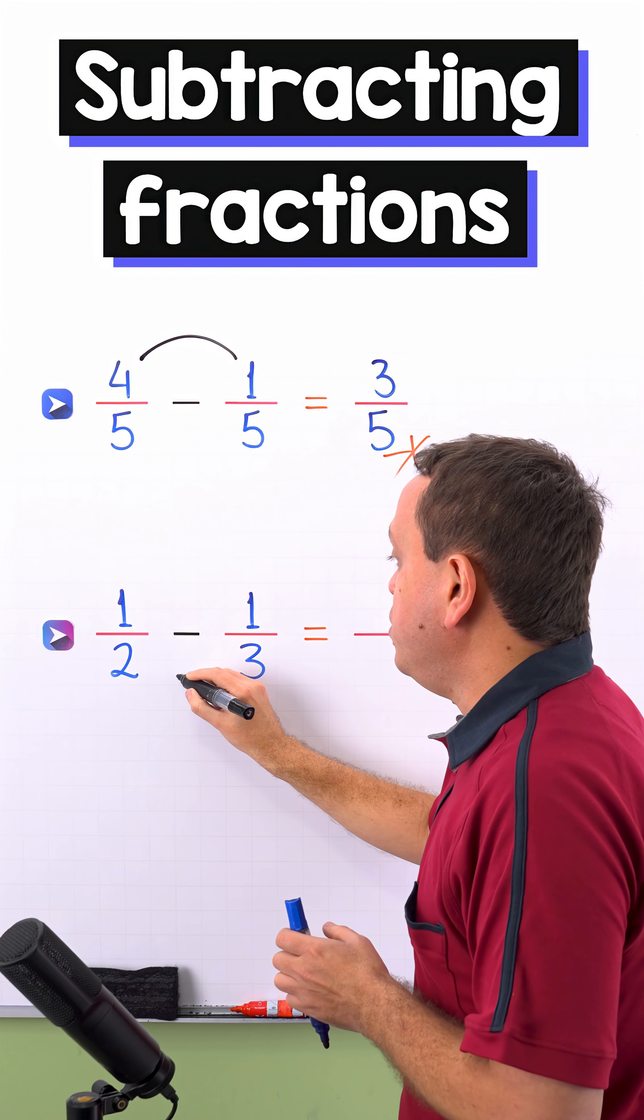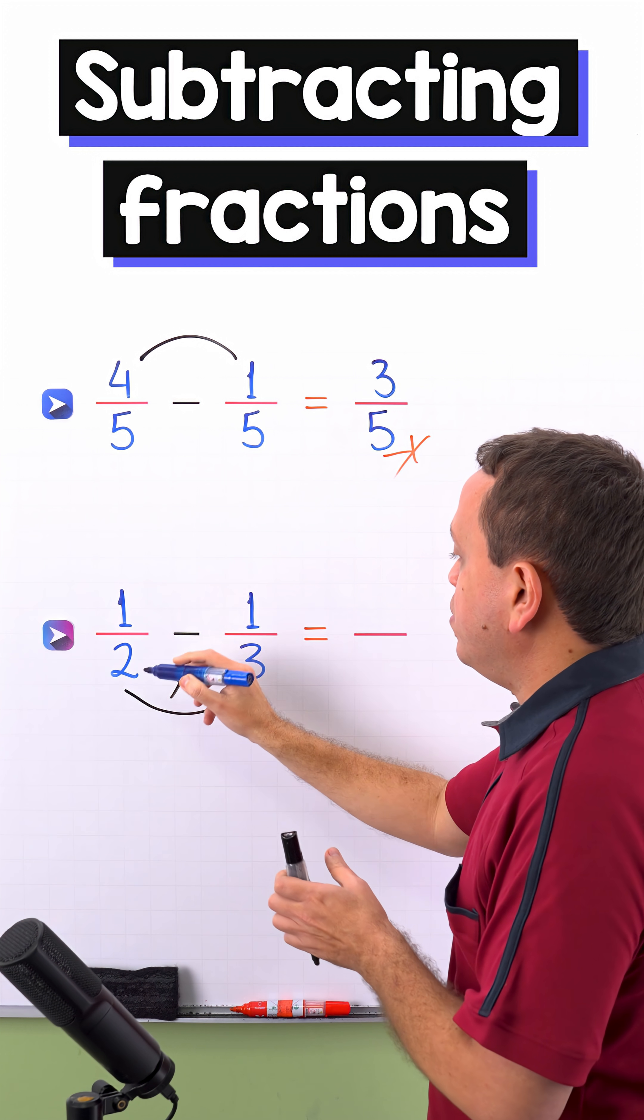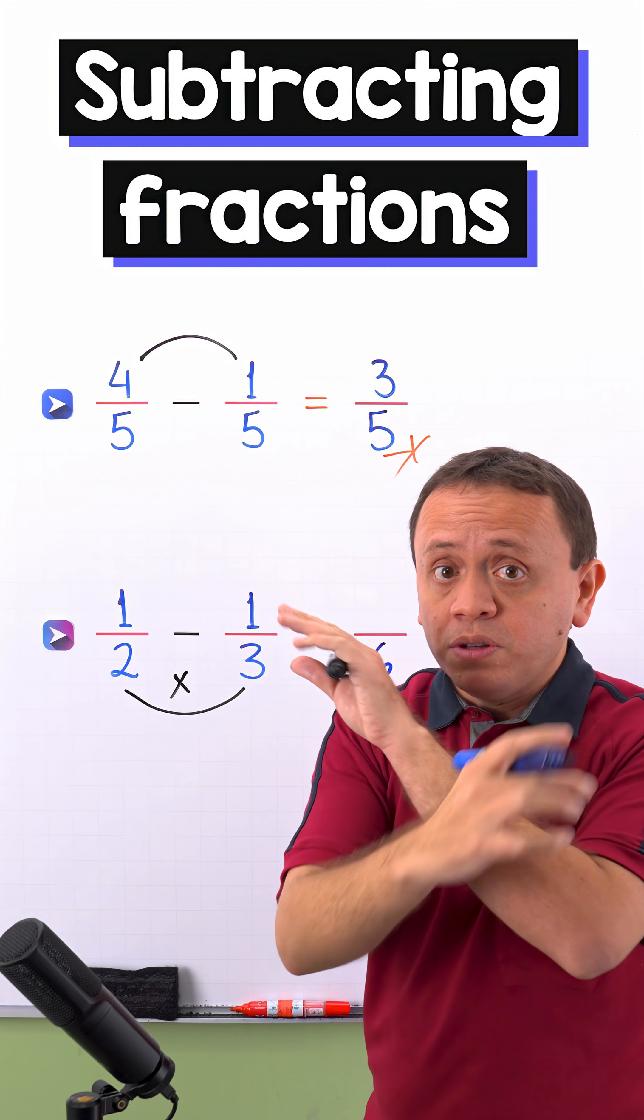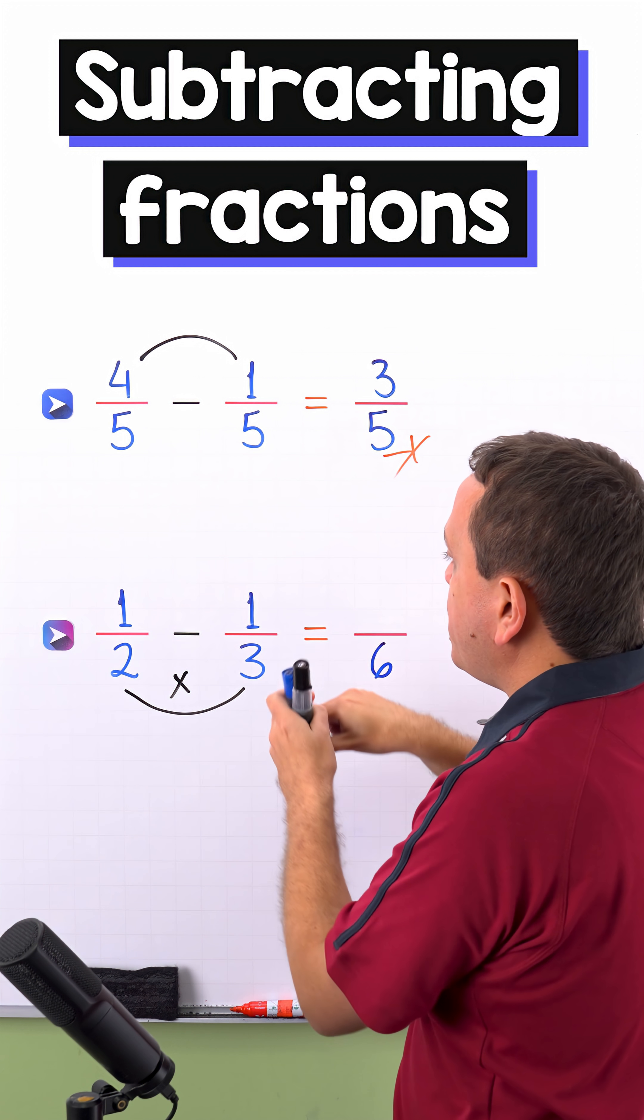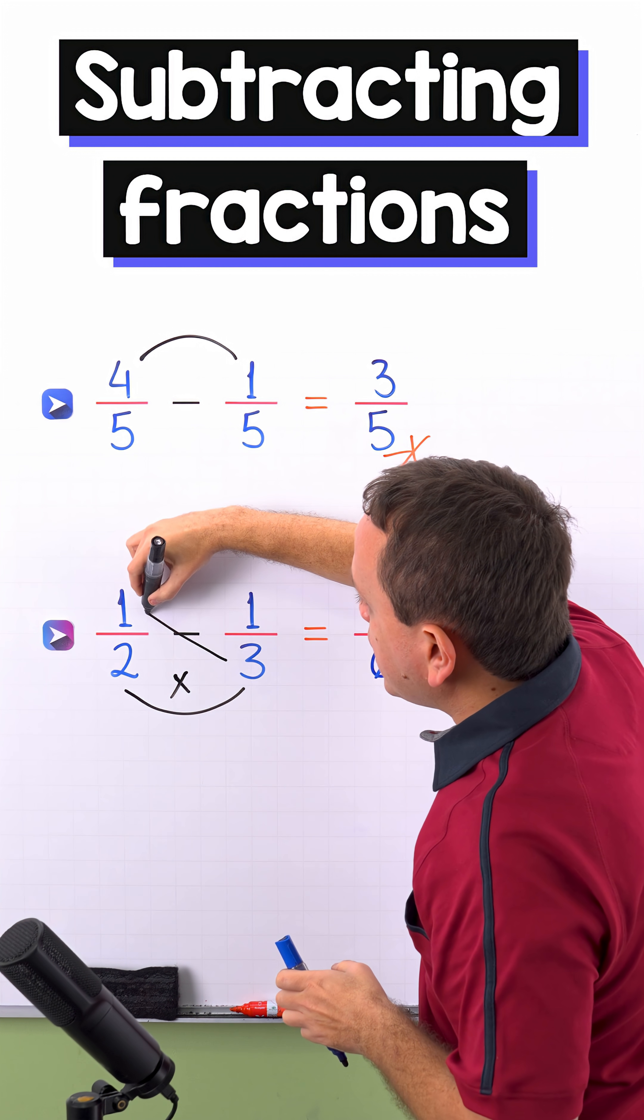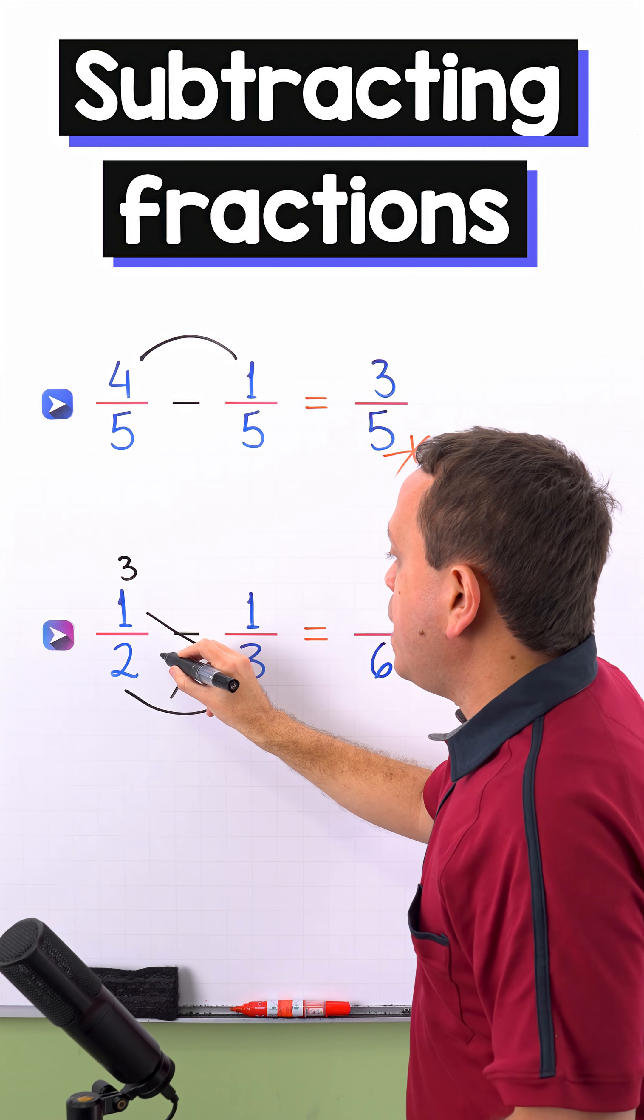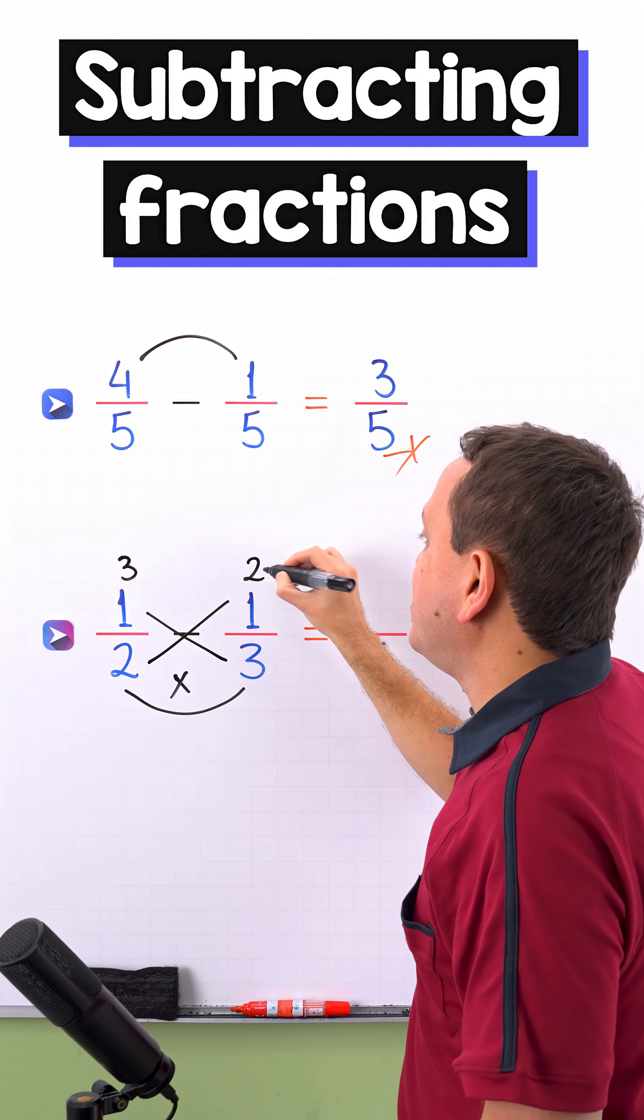So first, we're going to multiply the denominators and 2 times 3 gives us 6. Then we need to cross multiply from the bottom to the top. On this side, we have 3 times 1 and 3 times 1 gives us 3. Then comes 2 times 1 and 2 times 1 equals 2.